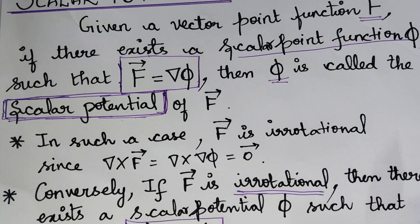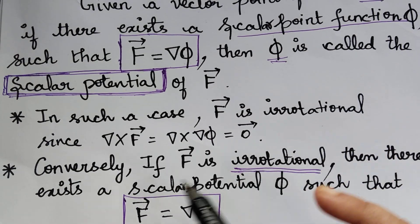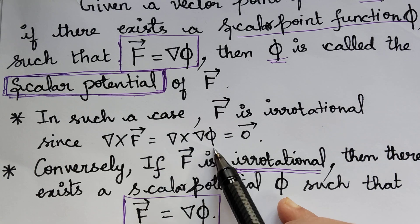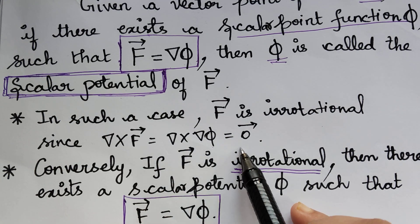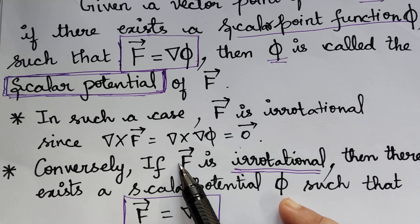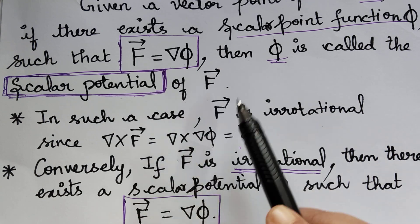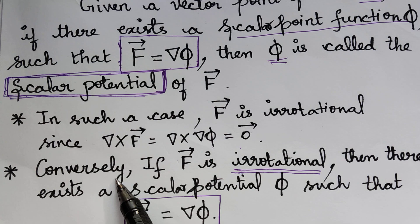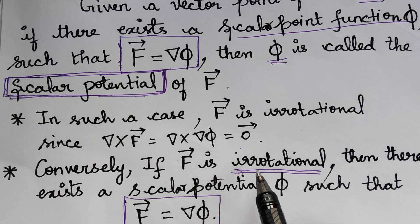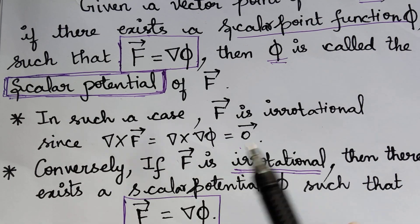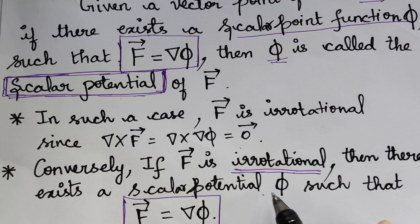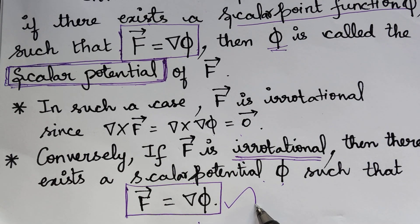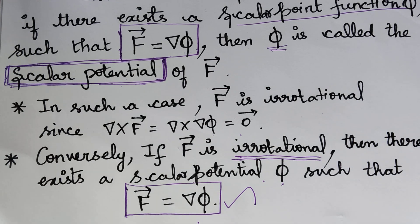In such a case, f vector is irrotational since nabla cross f vector equals nabla cross of nabla phi, which equals 0 vector. Therefore, whenever we have such a case, f vector will also be an irrotational vector. And conversely, if f vector is irrotational, then there will exist a scalar potential phi such that f vector equals nabla phi.